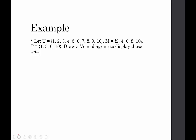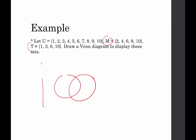Set M is {2, 4, 6, 8, 10} and set T is {1, 3, 6, 10}. We have two sets that are not the universe — the universe uses a rectangle, everything else uses circles. So I need two overlapping circles inside a rectangle. We're going to label our two sets M and T within the Venn diagram.